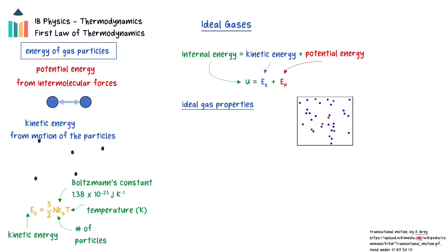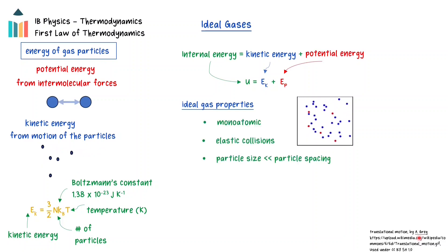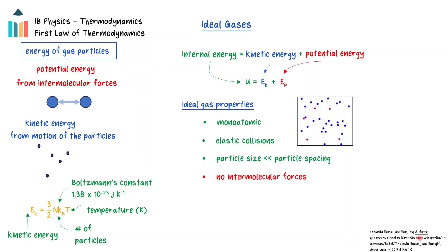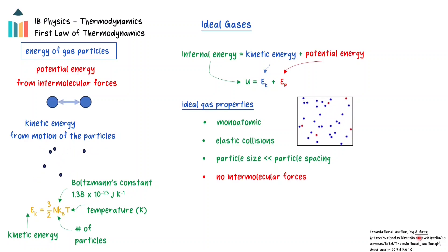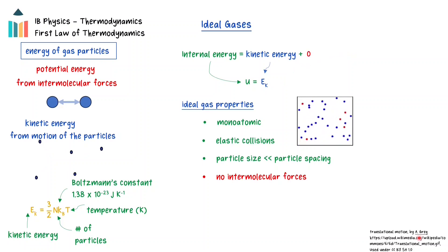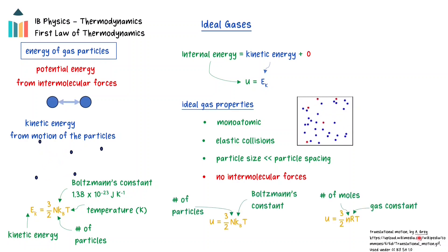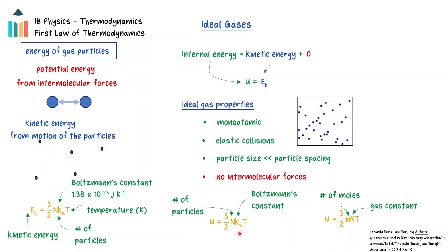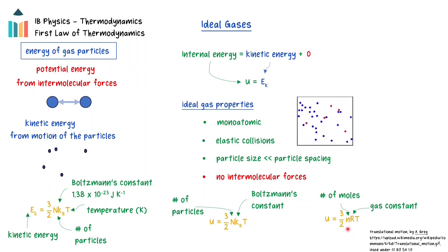As discussed in a previous video, there are a number of assumptions about ideal gases. The most important assumption is that there are no intermolecular forces for an ideal gas. Therefore, the potential energy is considered to be zero, and the internal energy of an ideal gas consists of only kinetic energy. The internal energy can then be found through: U = 3/2 × N × k_B × T, or 3/2 times the number of moles times the gas constant times the temperature.